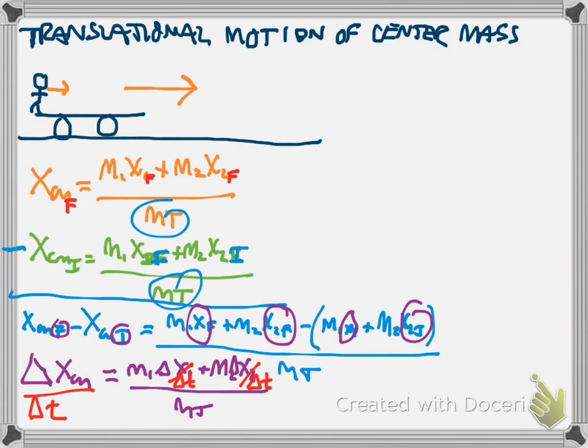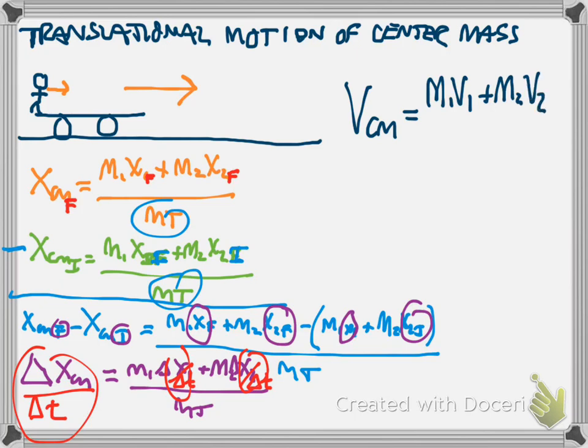And we know that delta x over delta t is velocity. So what this leaves us with is that we have velocity center of mass equals m1 velocity 1 plus m2 velocity 2 over the total mass.